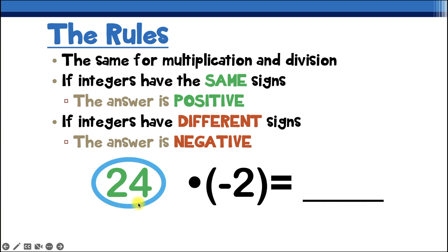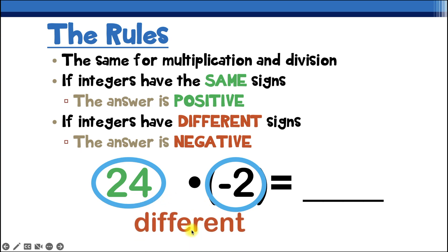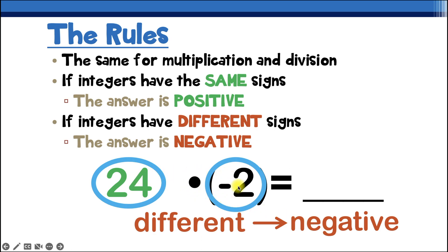Now we have positive 24 and negative 2. These signs are different, so our answer is going to be negative. 24 times 2 is 48, so our final answer is negative 48.